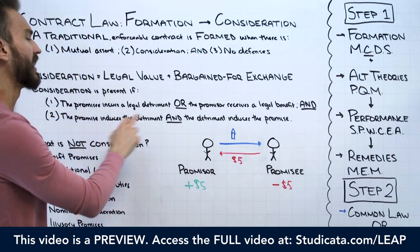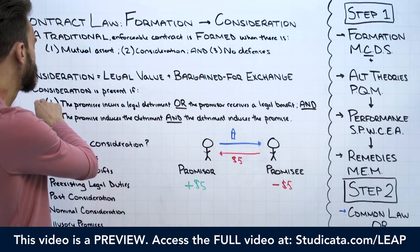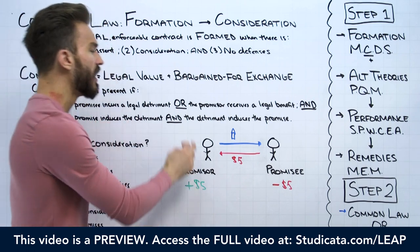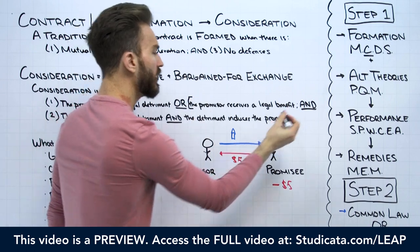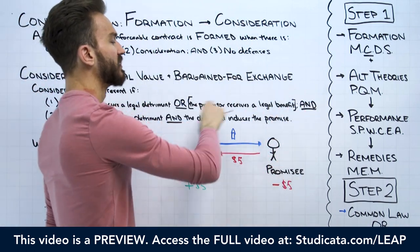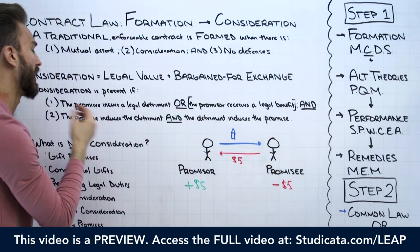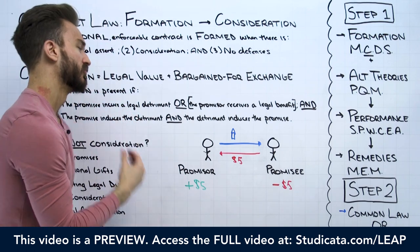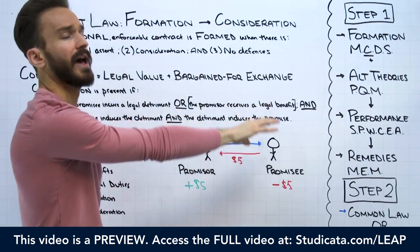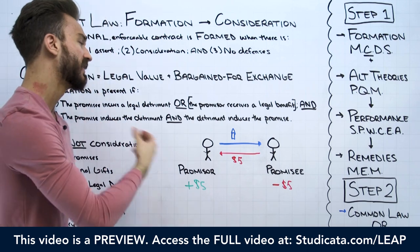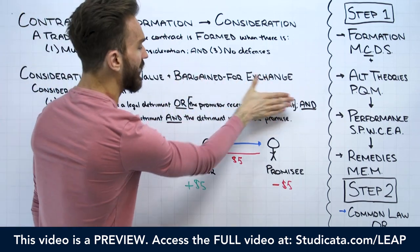One thing worth noting before we move on to our second element: you always want to start with whether the promisee has incurred a legal detriment. This is by far the more important part of the first element. The idea of whether the promisor receives a legal benefit — in a majority of courts — isn't even discussed. A majority of courts in the United States have dropped this requirement, and courts that do apply it put more emphasis on whether the promisee is incurring a legal detriment.